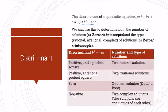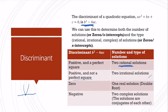The discriminant of a quadratic equation — what's under the square root, b squared minus 4ac — can be used to determine both the type and number of solutions. If the discriminant is positive and a perfect square, you get 2 rational solutions. If it's positive and not a perfect square, you get 2 irrational solutions. If the discriminant is 0, you get 1 real solution — a double root, meaning the parabola's vertex is right on the x-axis. And if it's negative, you have 2 complex solutions, and those solutions are conjugates of each other.